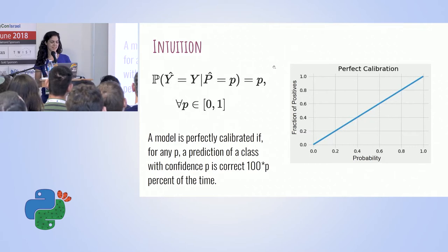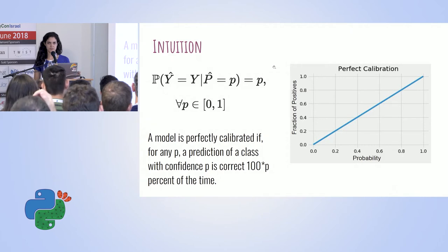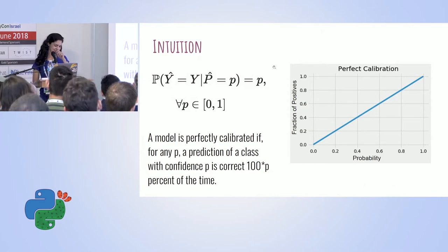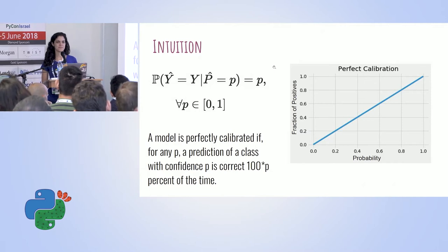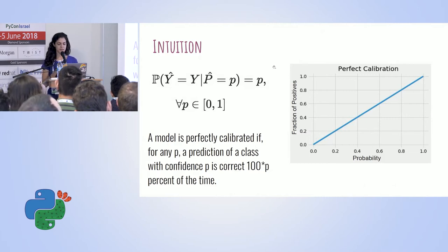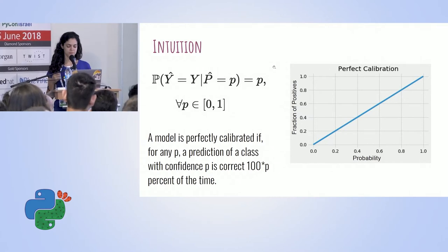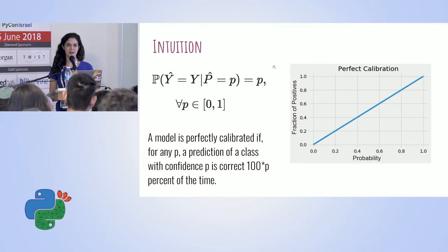A model is perfectly calibrated if for any P, a prediction of a class with confidence P is correct 100 times P percent of the time. Mathematically, we want the probability of Y-hat — the label that the model gave — given the true label Y, conditioned on P-hat, the probability estimation, to equal exactly P. If we plot all possible values of P between 0 and 1 against the fraction of positives among samples that received that probability estimation, we would expect a perfect diagonal line.